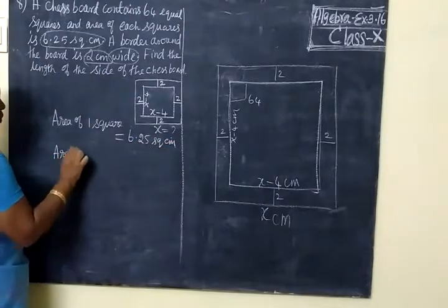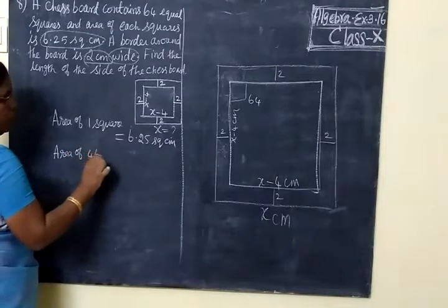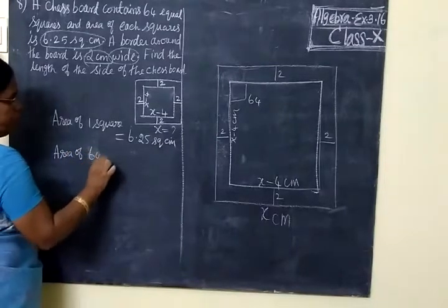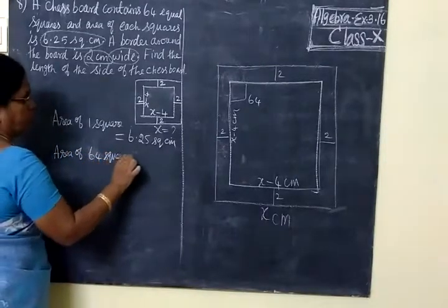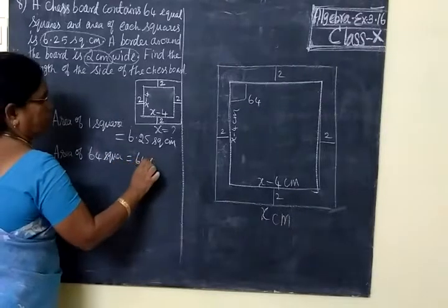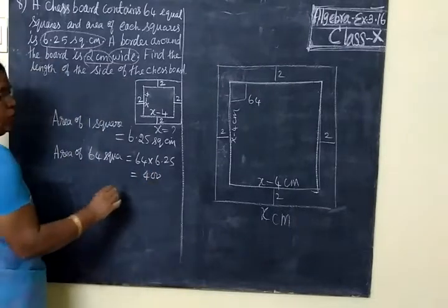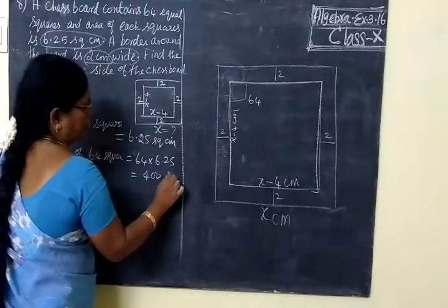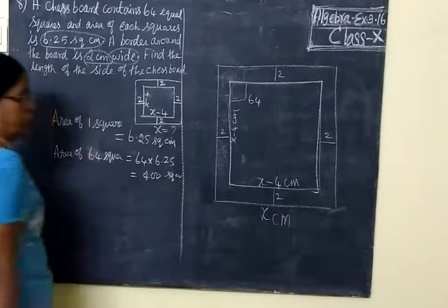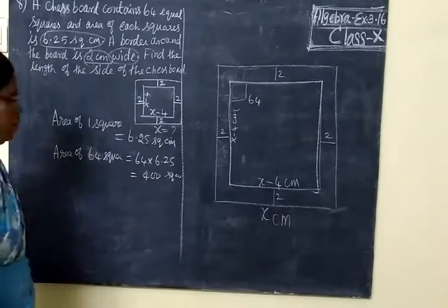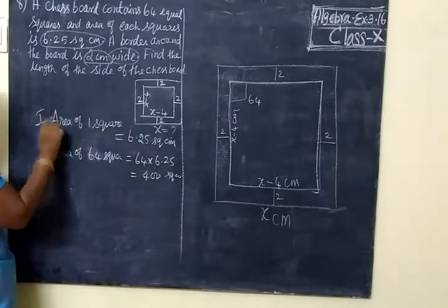Therefore, area of 64 squares is equal to 64 into 6.25. So, this is equal to 400 square centimeters.